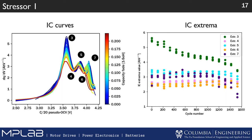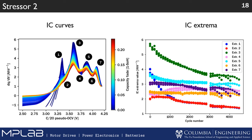This is what the IC curves look like. For stressor one — the low temperature — you can see how the extrema vary over time. For the high temperature stressor two, the incremental capacity curves show very different extrema that also branch out, similar to the overall capacity curve. This is why IC curves are such good predictors of state of health.